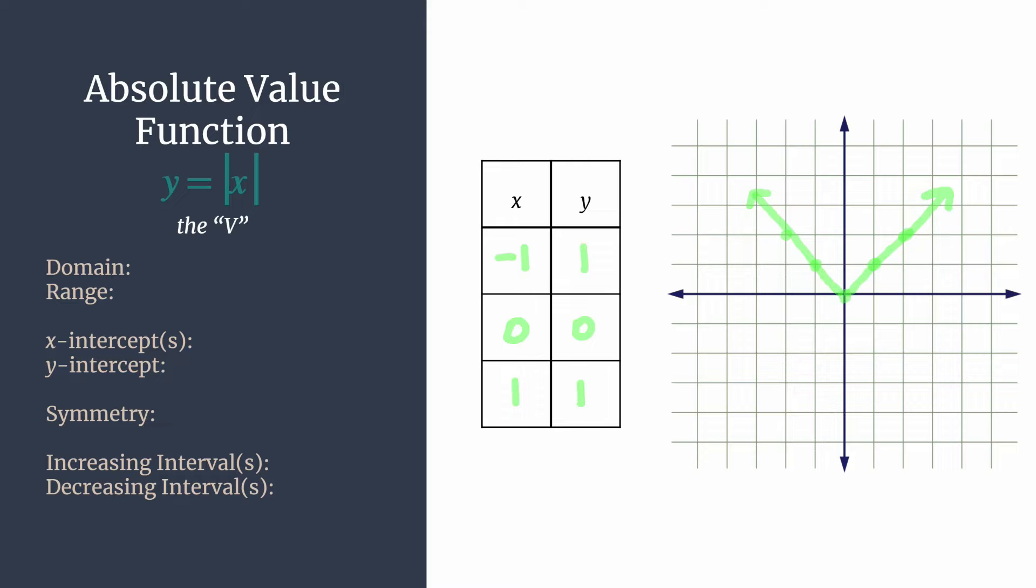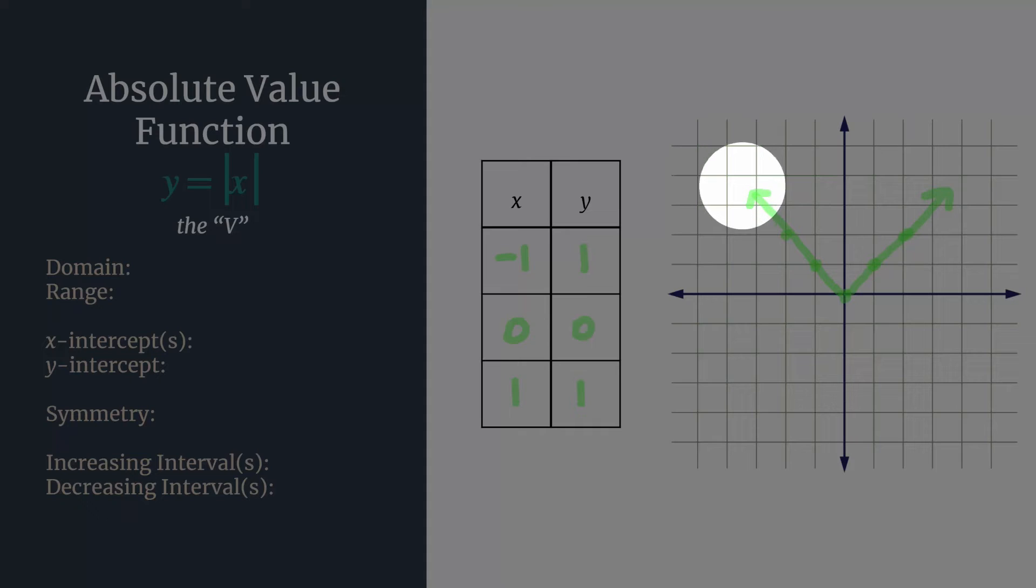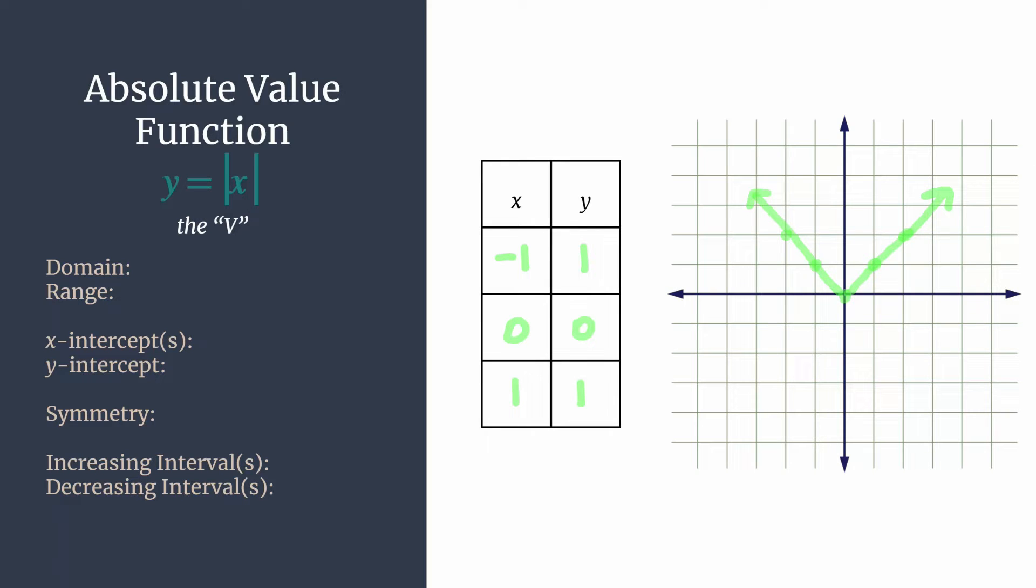Okay, so let's look through and find some of the characteristics of this absolute value function. The domain, remember, is just a list of all the possible x's. Look from left to right, and you'll be using interval notation to name all the x's. When we do that, you can see starting from the far left of the graph, all x's are included. So all real numbers is what we have going on here.